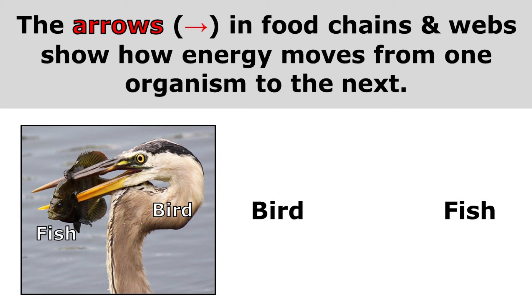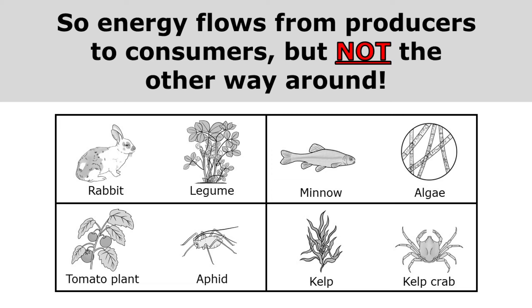Here I see a fish getting eaten by a bird, so I'll draw my arrow from the fish to the bird, showing that energy is being transferred from the fish to the bird as the bird consumes the fish. Energy flows from producers to consumers but not the other way around.